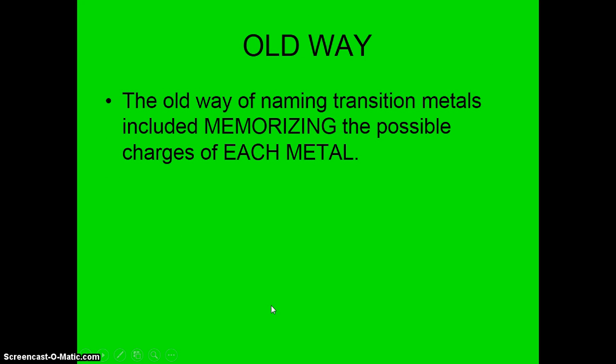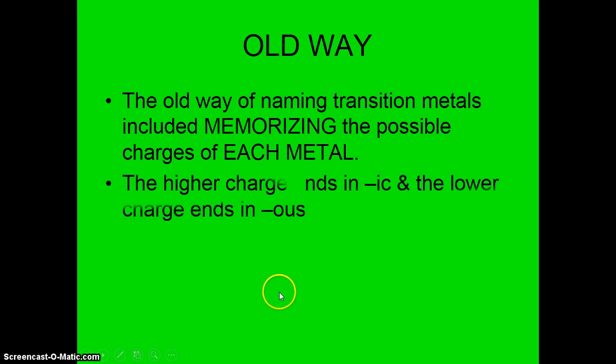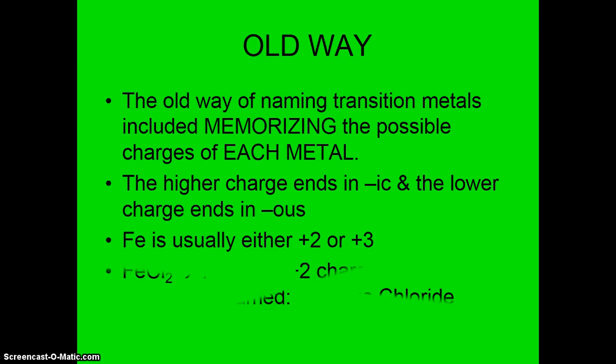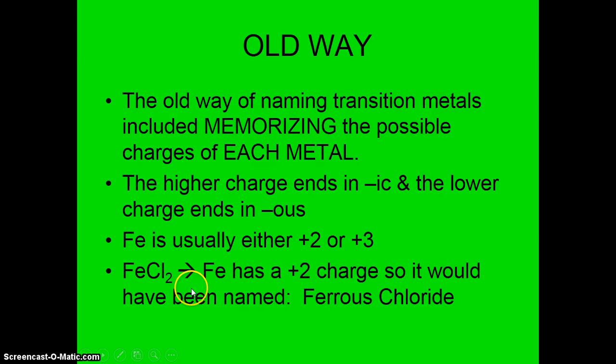Now your book discusses an old way of naming. And this is used by using memorization and depending on what the charge is on the metal. So old way you had to name transition metals included memorizing the possible charges of each metal. The higher one ends in ick and the lower one ends in us. So for example, iron has either a plus 2 or a plus 3 charge. And the only way you would know that is just by memorization. So what we would do then, FeCl2, instead of being iron 2 chloride,